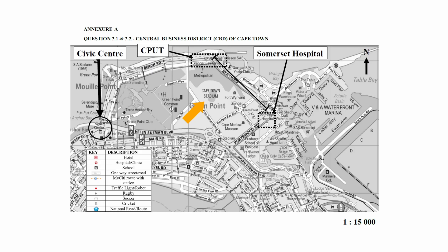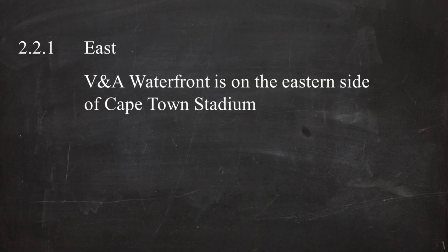On the map in Annexure A, Cape Town Stadium is located here and the V&A Waterfront is located to the east of it. Using the direction of north given on Annexure A, east is to the right of north, west is to the left, and south is the opposite direction of north. So if a person leaves Cape Town Stadium facing the V&A Waterfront, they will be facing in an easterly direction. The correct answer is east.